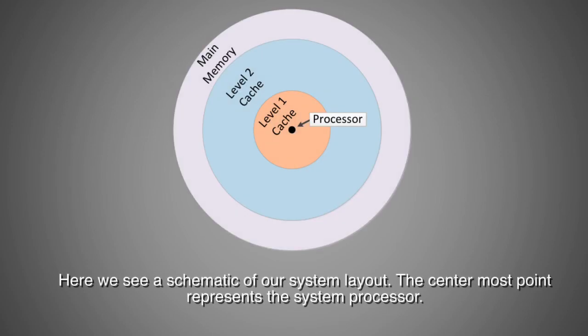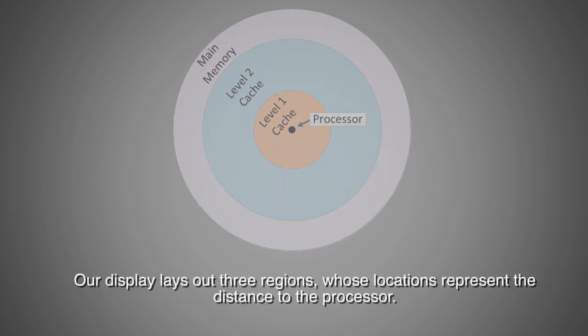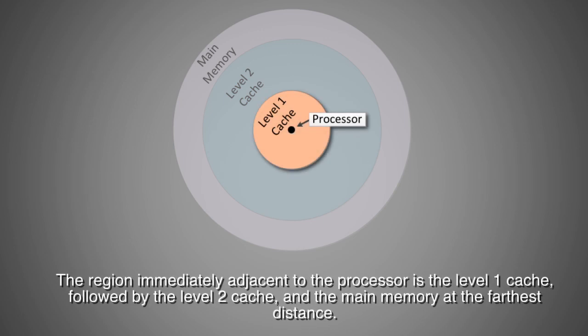Here we see a schematic of our system layout. The center-most point represents the system processor. Our display lays out three regions whose locations represent the distance to the processor. The region immediately adjacent to the processor is the level 1 cache, followed by the level 2 cache, and the main memory at the farthest distance.